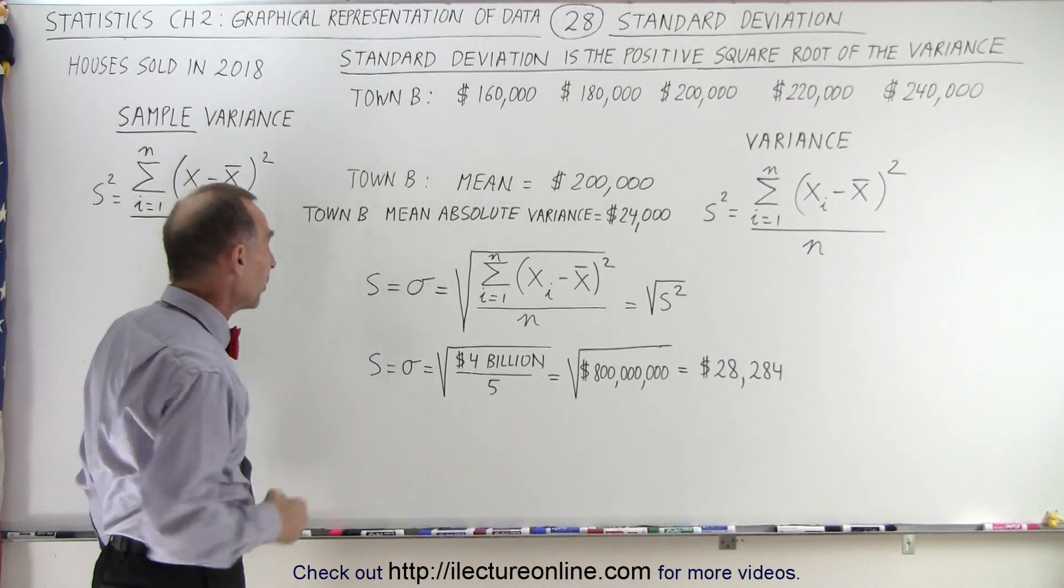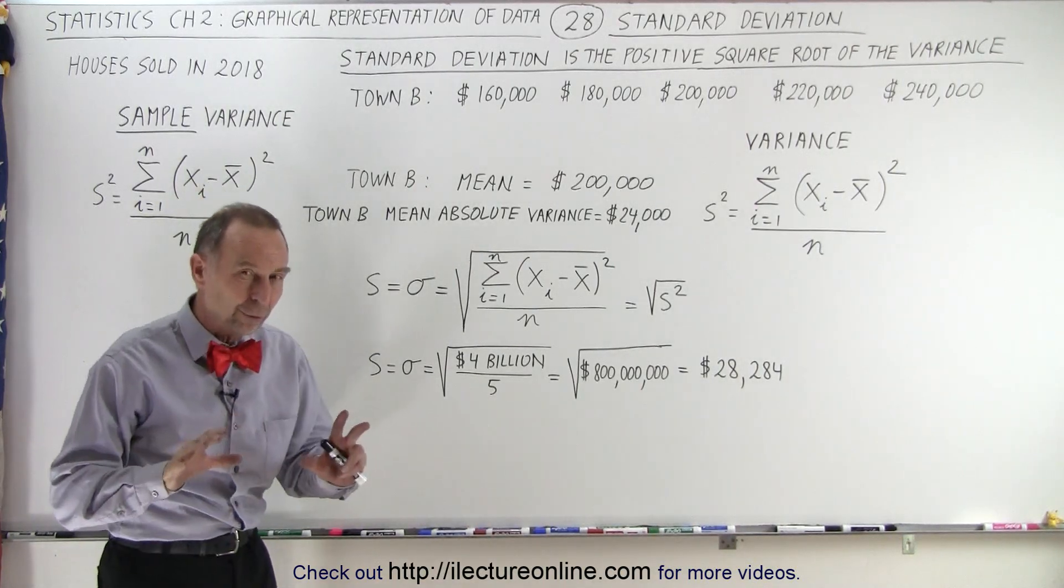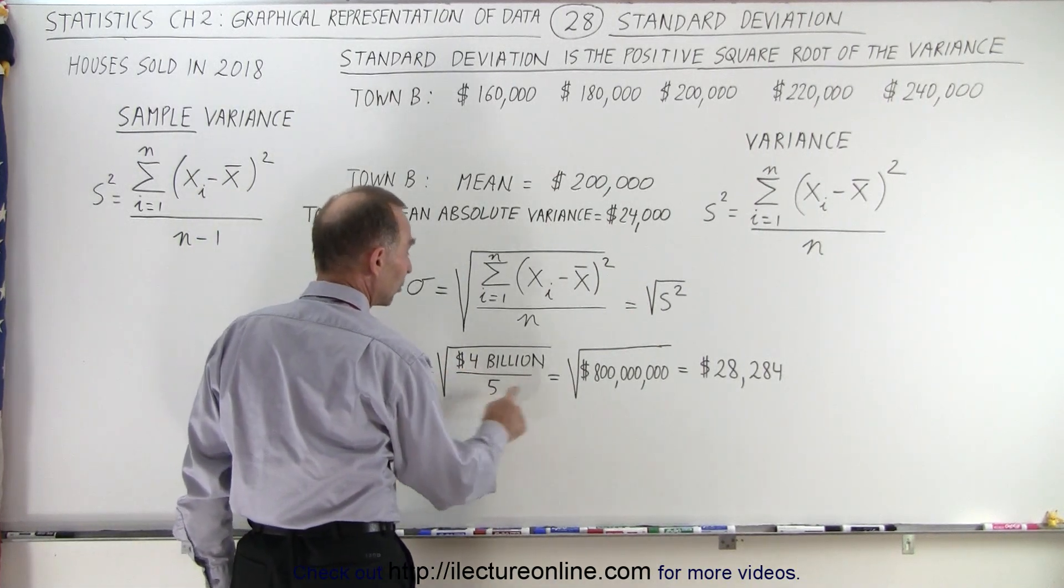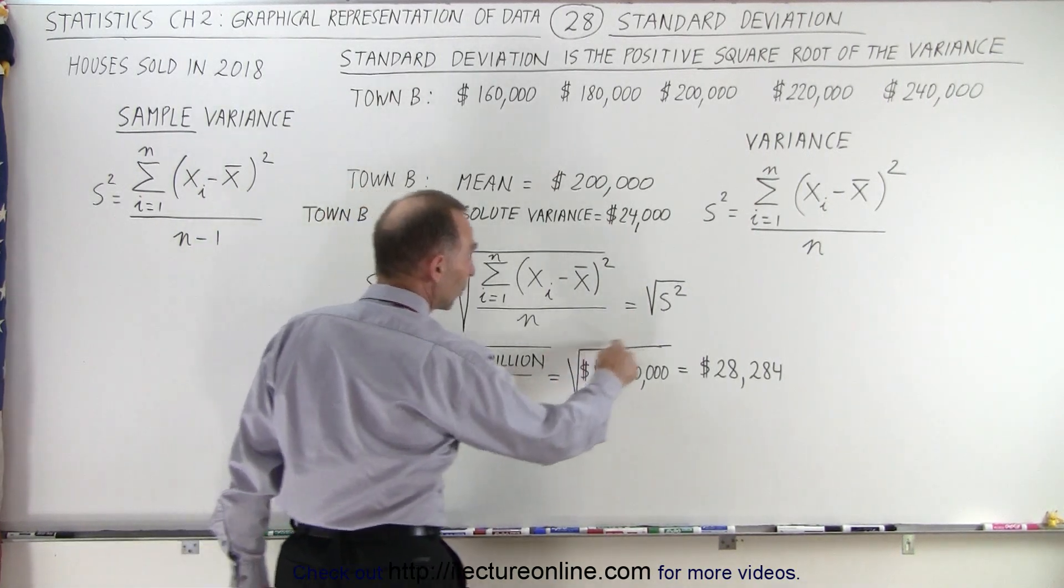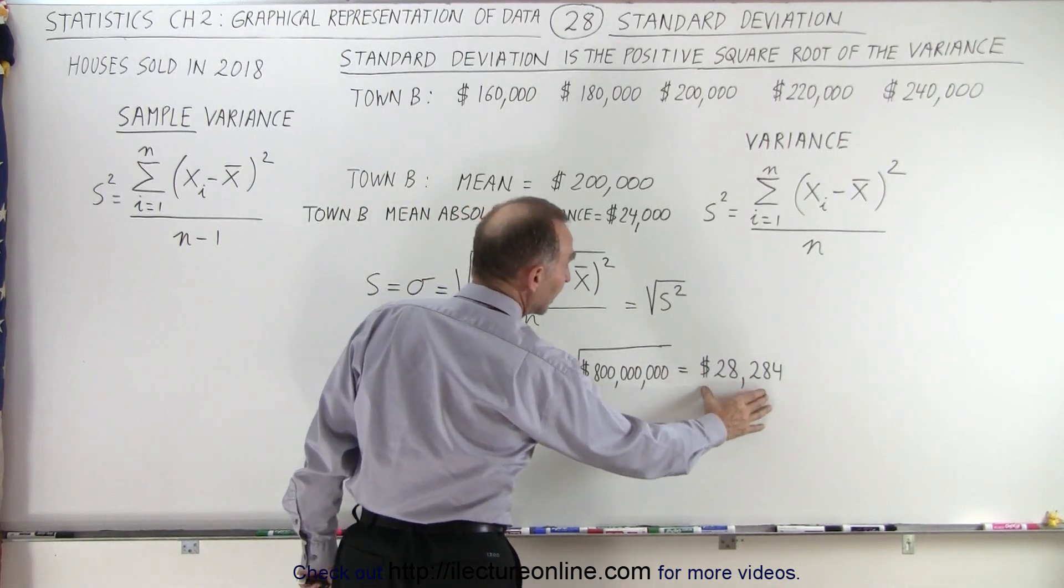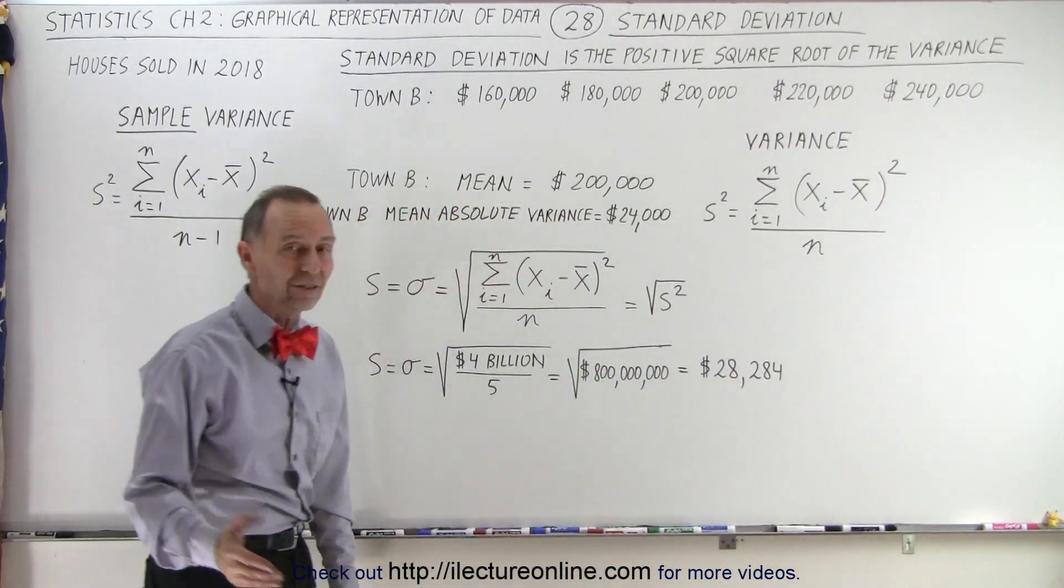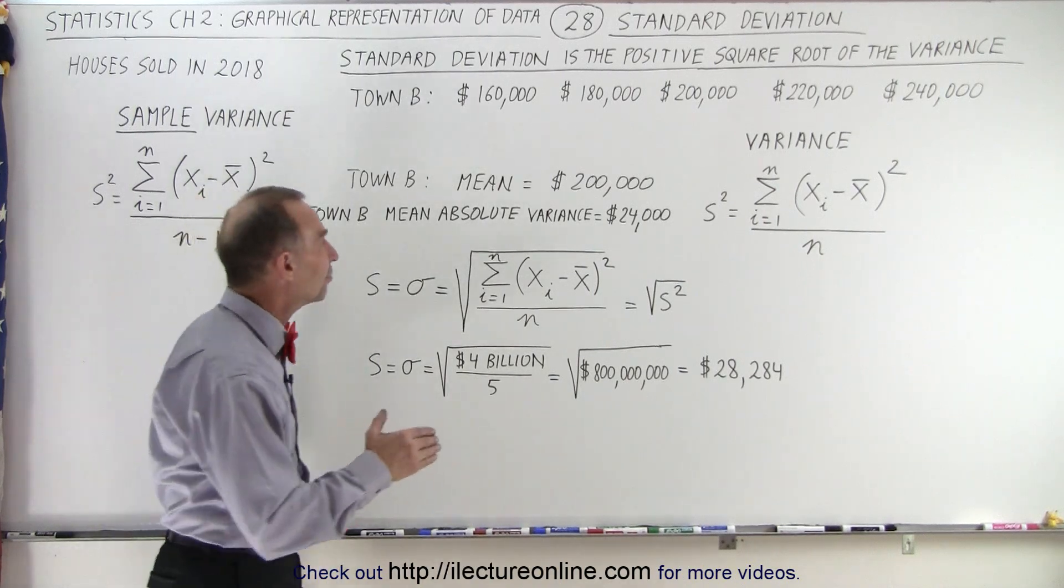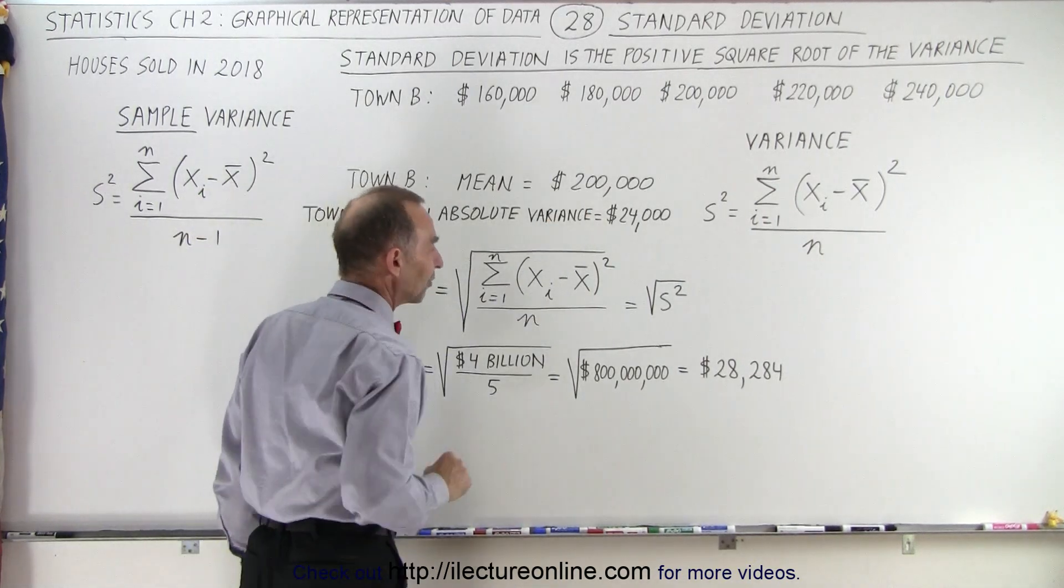Putting in the numbers that we had, so we get a feel for the type of number we're going to get, we take the 4 billion divided by 5, which was 800 million, we take the square root of that, and we end up with 28,284 being the standard deviation from the mean, the standard deviation from the average house price value.